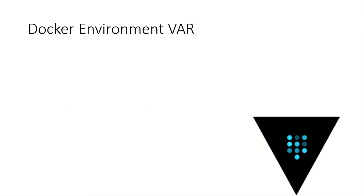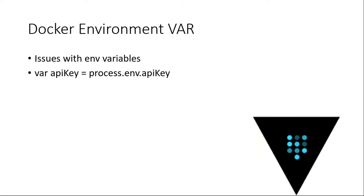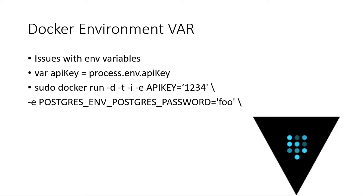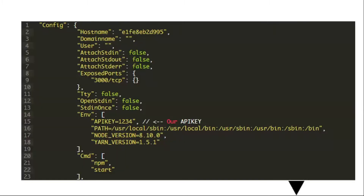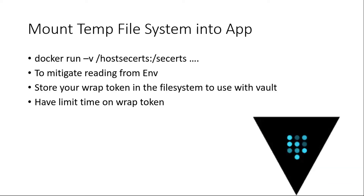Now let's talk about the Docker environment. How do you pass environment variables into it? In your Node code you'd use something like process.env.API_KEY to get information, and when you run Docker you pass in api_key=1234 and run it. What's the issue with this? If someone hacks into your computer and has root access, they can do docker inspect and actually see your API key. So passing secrets as environment variables is not as safe as you think.